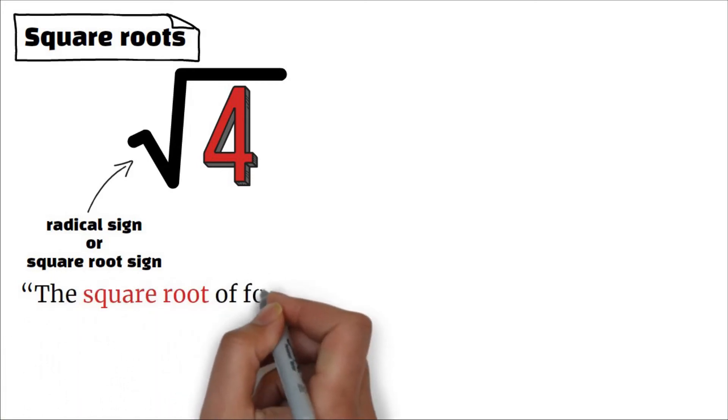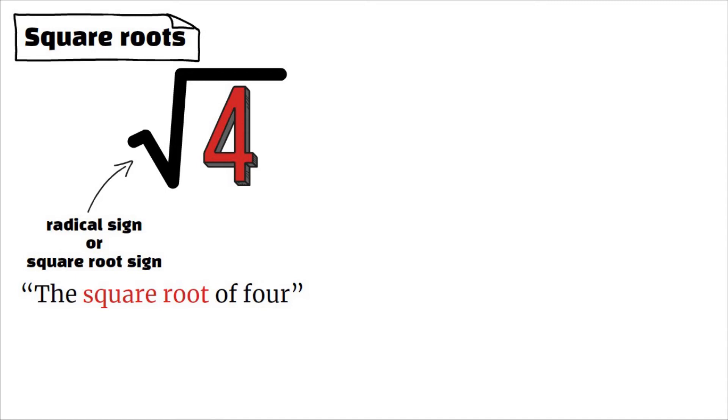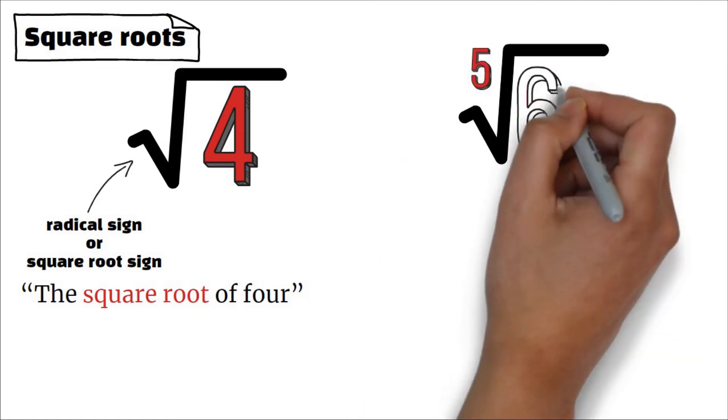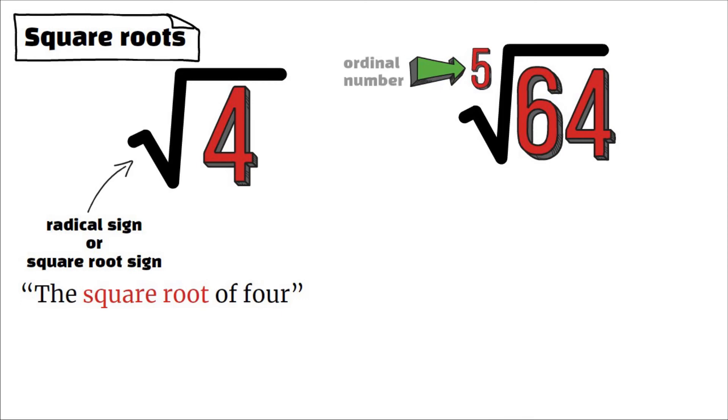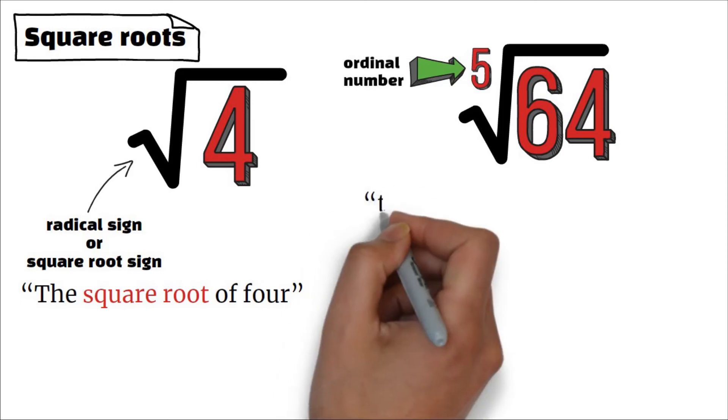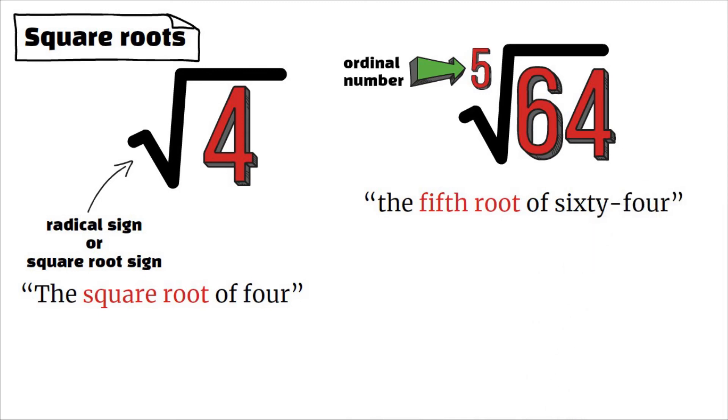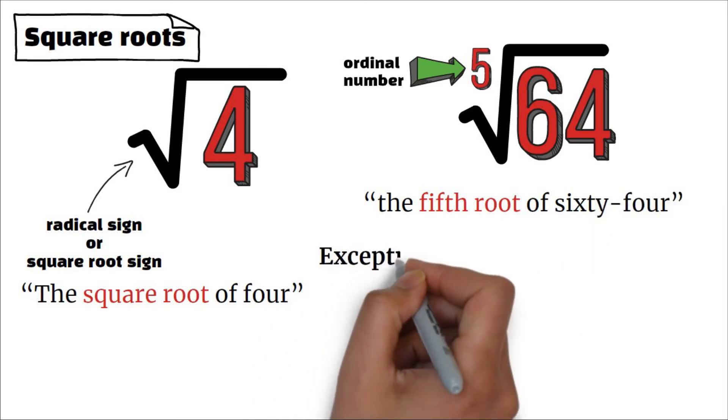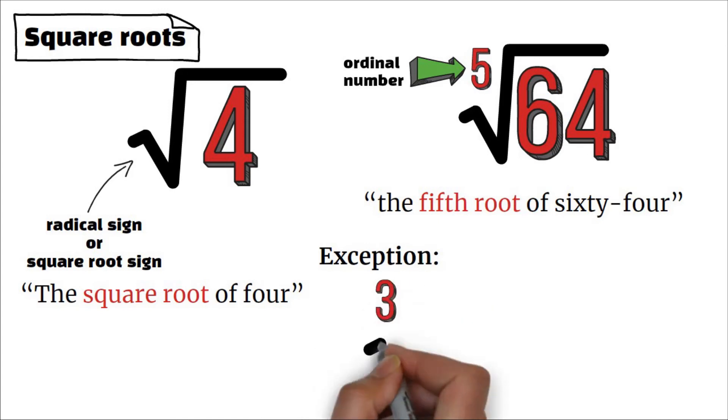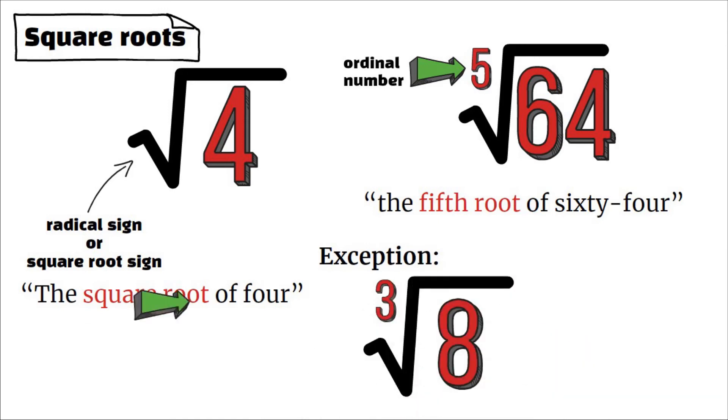If there is a number above the radical sign, then we use an ordinal number to refer to it. For example, the fifth root of sixty-four. However, there is an exception.